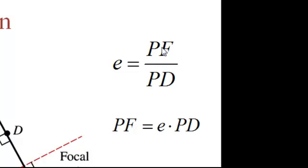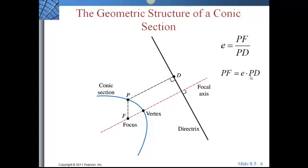So taking our E equals PF over PD, we can solve that for PF, and we get PF equals E times PD. And we're going to use that a little bit later. So now you can see where it comes from.